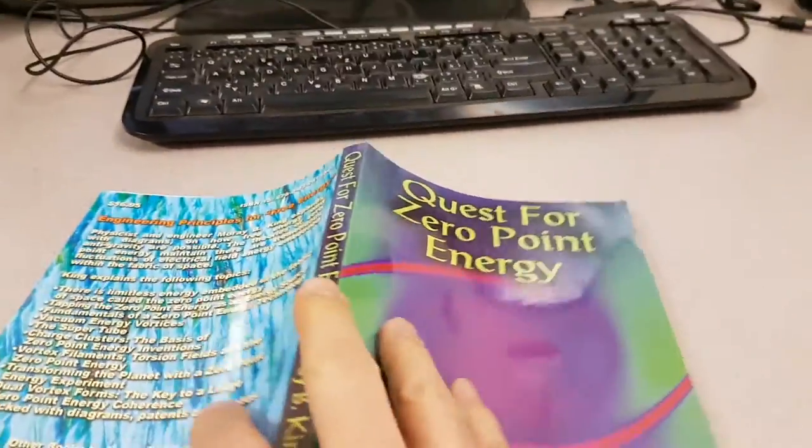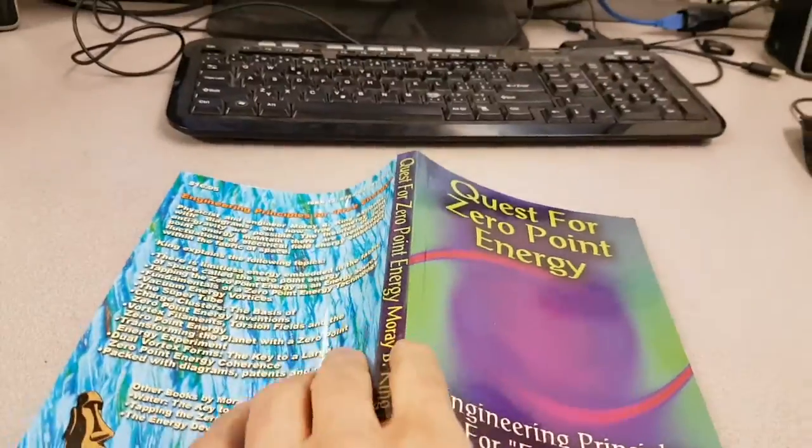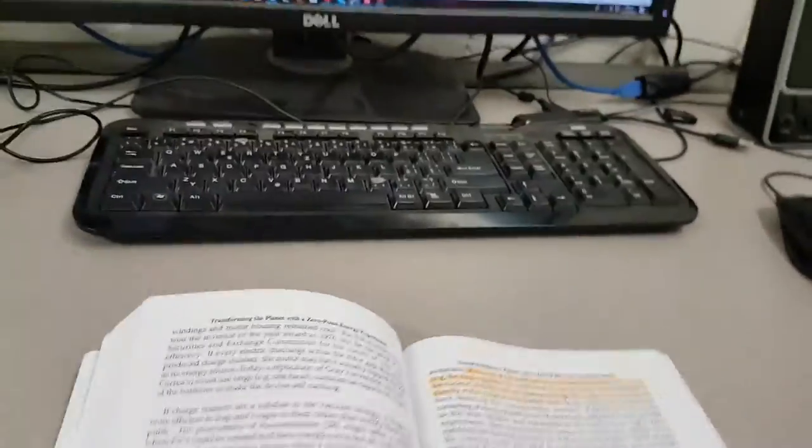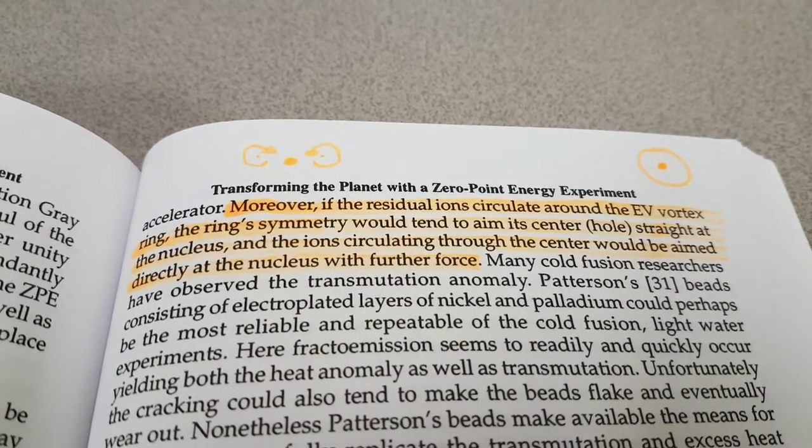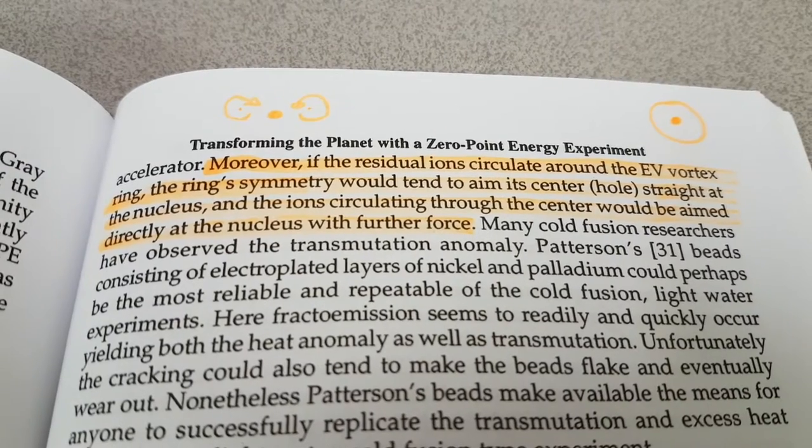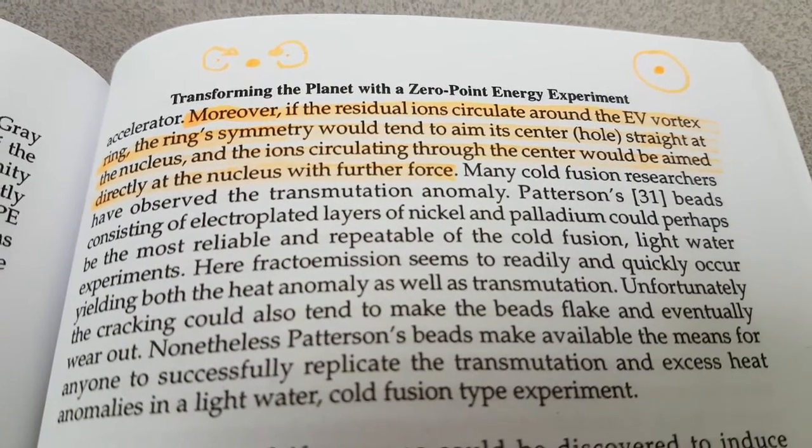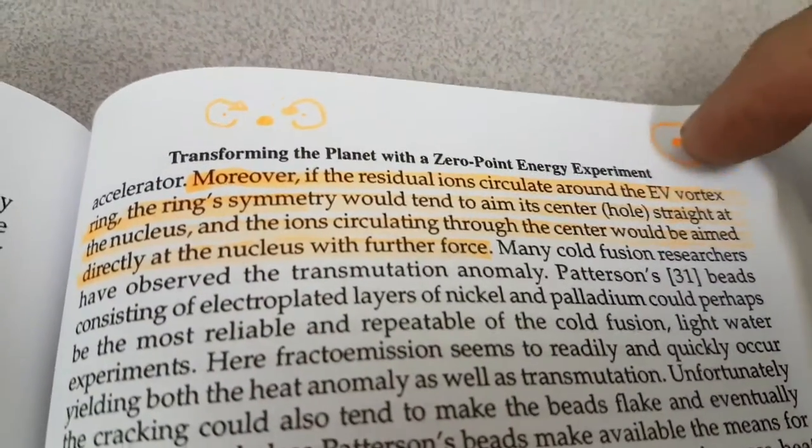I did tell people to get this book, which I read on the 23rd of January. The single paragraph that absolutely stunned me in this more than anything. Hopefully some of you got this by now. It was this on page 155. It says, moreover, if the residual ions circulate around the EV vortex ring, the ring symmetry would tend to aim its center hole straight at the nucleus. The ions circulating through the center would be aimed directly at the nucleus with further force. Many cold fusion researchers have observed the transmutation anomaly.